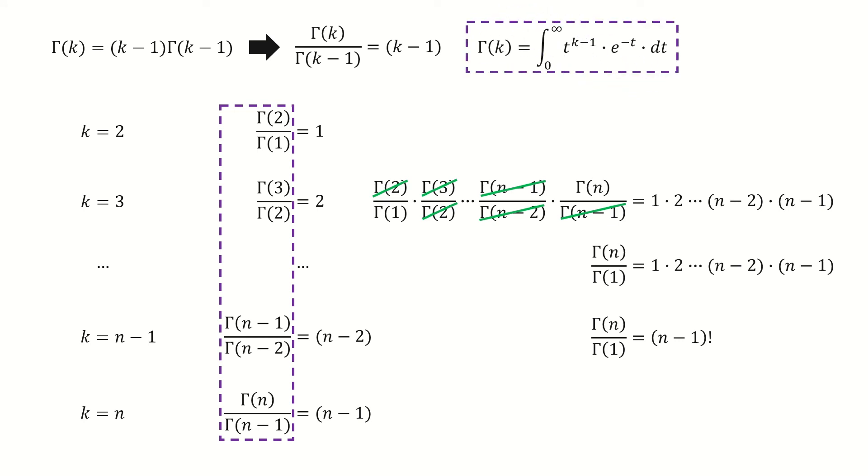We go back to this equation and let k equals 1. For the right-hand side, t to the power 0 is 1, so this integral is reduced here. Then we just integrate, and we get gamma 1 equals 1.